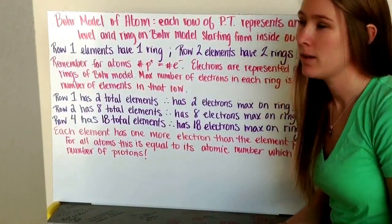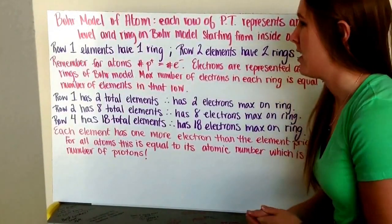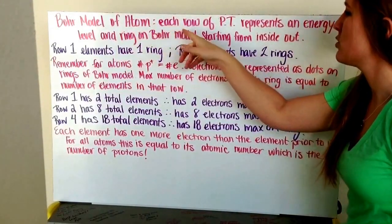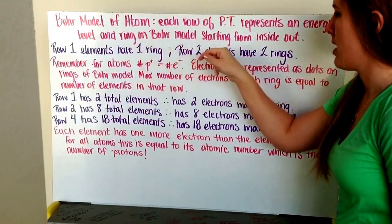This video is on the Bohr model of the hydrogen atom and of just the Bohr model of the atom. So the Bohr model of the atom, for this, each row of the periodic table represents an energy level and a ring on the Bohr model.